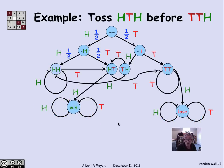Well, here's what the whole diagram looks like. In particular, once you've flipped HT, if you then flip an H, you've won because you got to HTH first. And you stay in the win state forever. Or alternatively, once you flip TT, if you flip an H, you've lost because TTH has come up first. If you flip a T again, you stay in state TT.